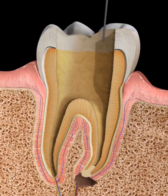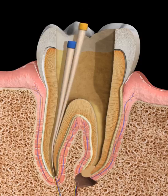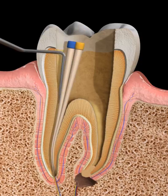A material called gutta percha is then used to fill and tightly seal the root canal system. This material is bioinert, so it does not react with the body.